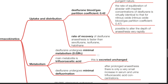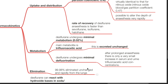Metabolism. Desflurane undergoes minimal metabolism — only 0.02% is metabolized, with the main metabolite being trifluoroacetic acid, which is excreted unchanged. Desflurane undergoes minimal defluorination; after prolonged anesthesia there is only a very small increase in serum and urine trifluoroacetic acid concentrations. 99.98% of desflurane is eliminated unchanged and rapidly from the lungs.